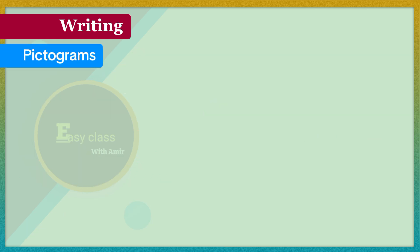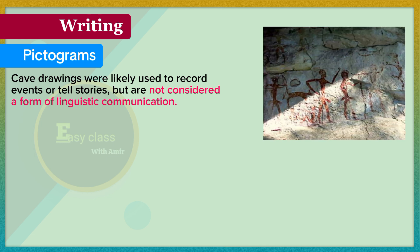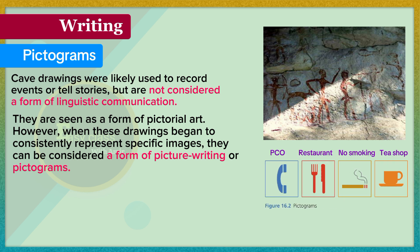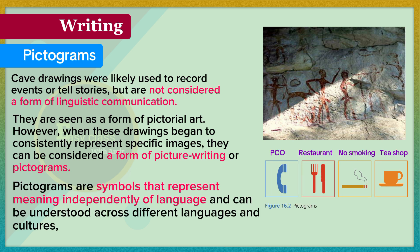Pictograms. Cave drawings were likely used to record events or tell stories, but are not considered a form of linguistic communication. They are seen as a form of pictorial art. However, when these drawings began to consistently represent specific images, they can be considered a form of picture writing, or pictograms. Pictograms are symbols that represent meaning independently of language, and can be understood across different languages and cultures.